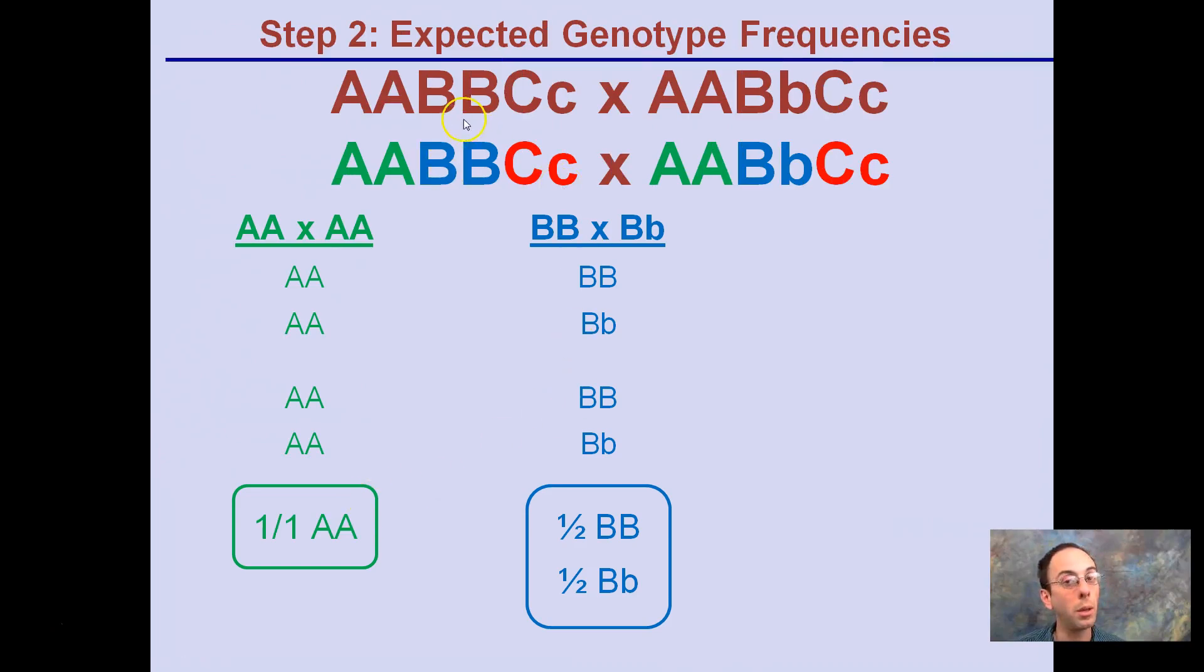For the B, because we have a homozygous dominant and a heterozygous, half the time we'll have big B, big B, and the other half the time will be heterozygous, big B, little b. C gets a little more complex here with both being heterozygous. A quarter will be homozygous dominant, the other quarter will be homozygous recessive, and half the time it'll be heterozygous.